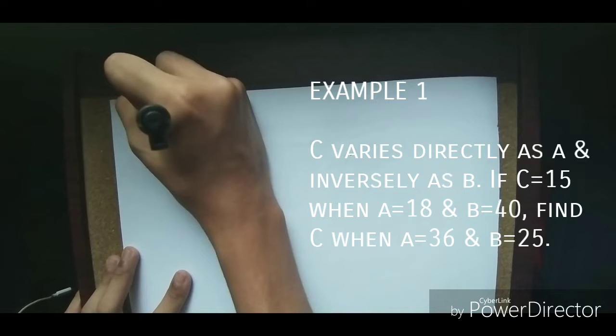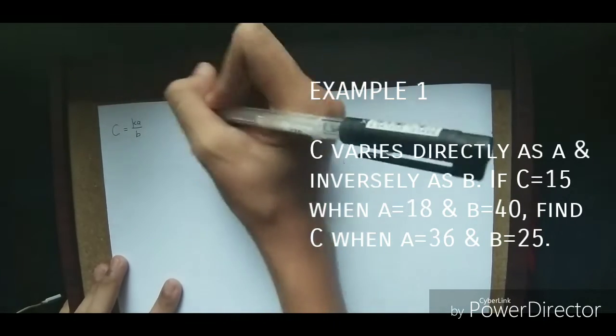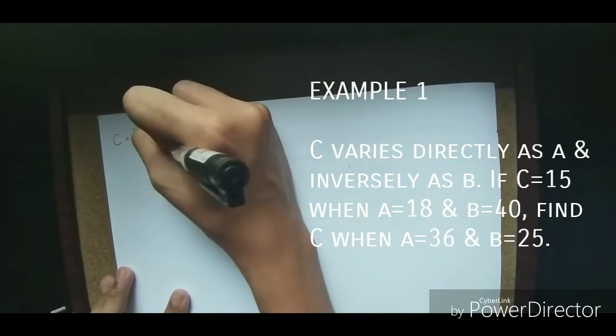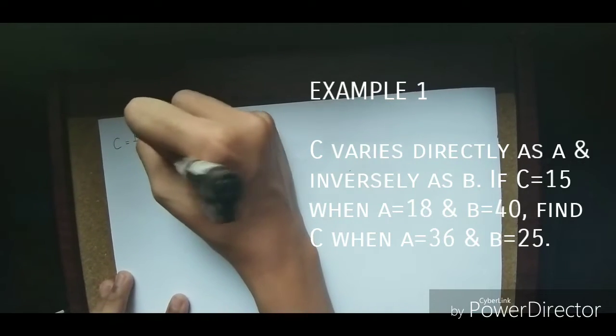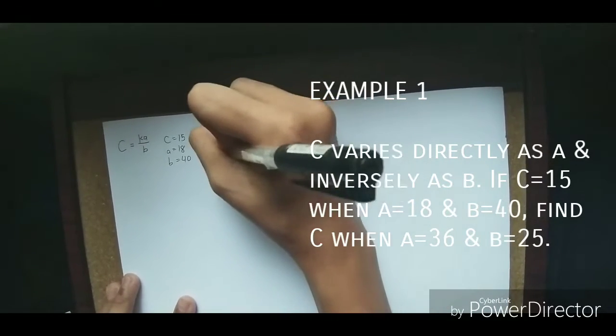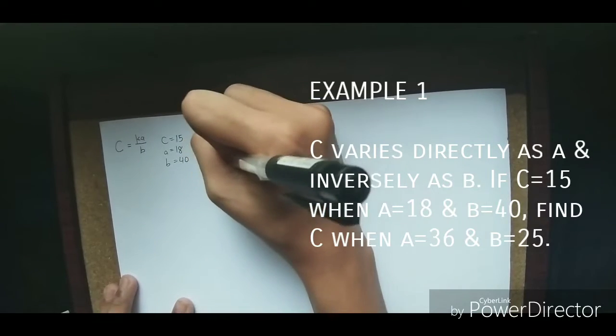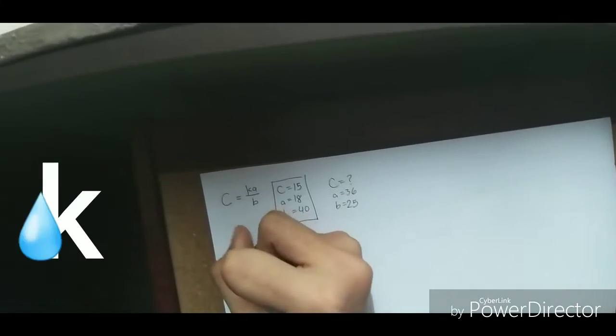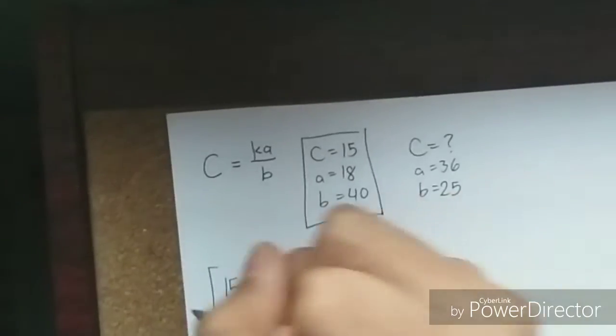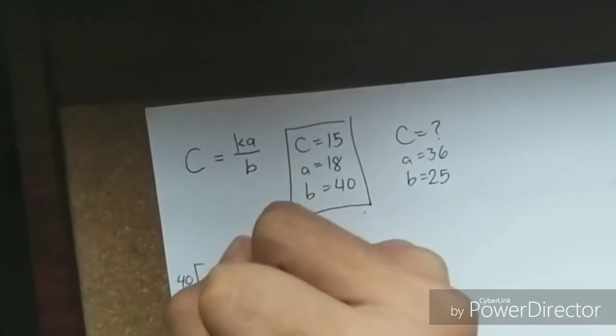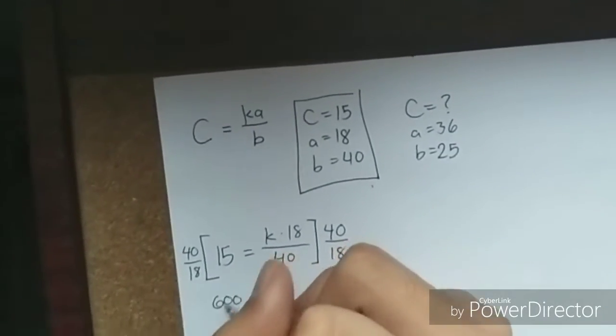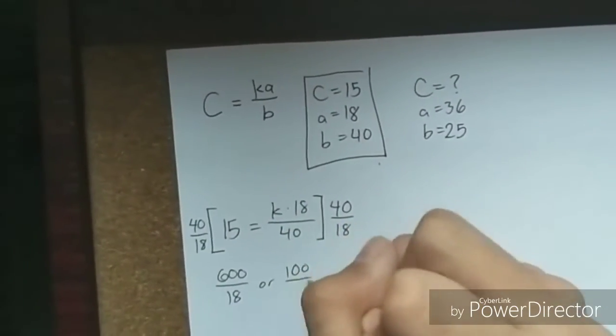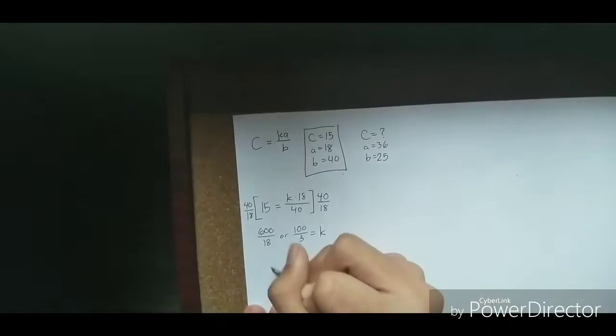C varies directly as A and inversely as B. If C is 15 when A is 18 and B is 40, find C when A is 36 and B is 25. First off, we use these values and substitute them into our equation. To isolate k on just one side, we multiply 40 over 18 to both sides, which gives us 600 over 18 or 100 over 3 as our value for k.